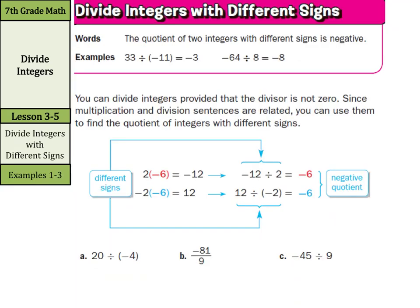So our rule for dividing integers with different signs: the quotient of two integers with different signs is negative. Well, as we look at 20 divided by negative 4, just do 20 divided by 4 is 5, and a positive divided by a negative — here we have different signs — is negative 5.